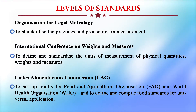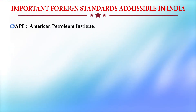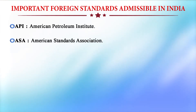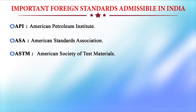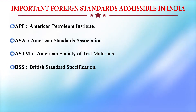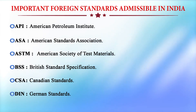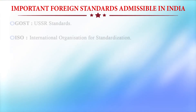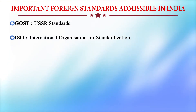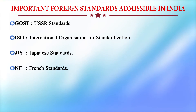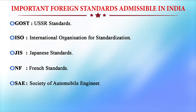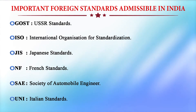The International Conference on Weights and Measures, set up jointly by the Food and Agriculture Organization and World Health Organization, defines and compiles food standards for universal application. Important foreign standards admissible in India include: API (American Petroleum Institute), ASA (American Standards Association), ASTM (American Society of Test Materials), BSS (British Standards Specification), CSA (Canadian Standards), DIN (German Standards), ISO (International Organization for Standardization), JIS (Japanese Standard), NF (French Standards), SAE (Society of Automobile Engineers), and UNI (Italian Standards).